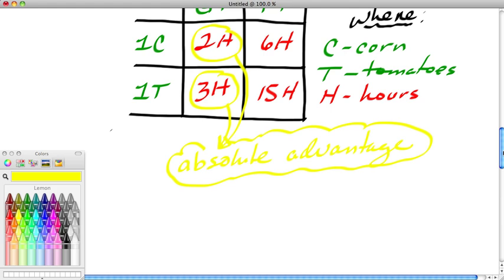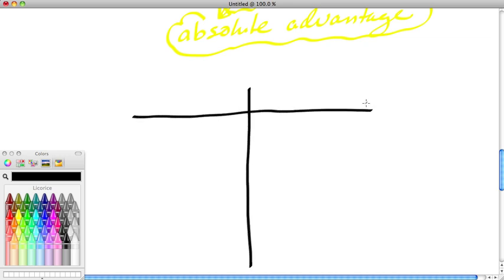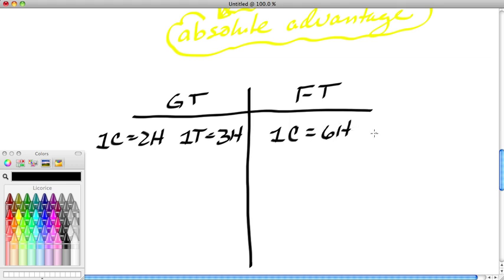So we're going to set up a worksheet for doing that. We'll set up a worksheet and use the data from our resource table. Green Thumb will be on the left here, Five Thumbs will be on the right. One corn equals two hours for Green Thumb. One tomato equals three hours. One corn equals six hours for Five Thumbs. One tomato equals 15 hours.